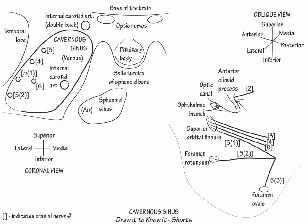Finally show the walls of the cavernous sinus. Its roof lies at the level of the anterior clinoid process. Anteriorly, the cavernous sinus extends to the superior orbital fissure.